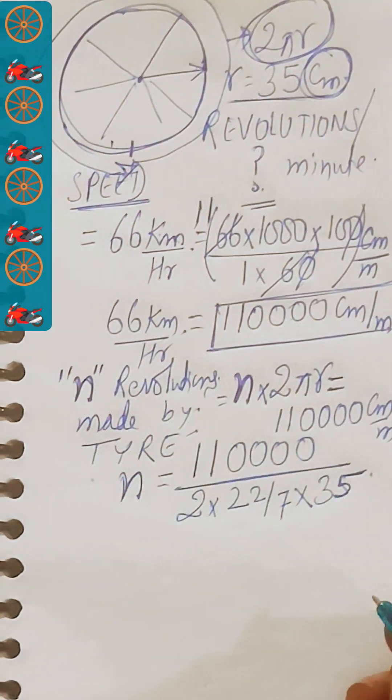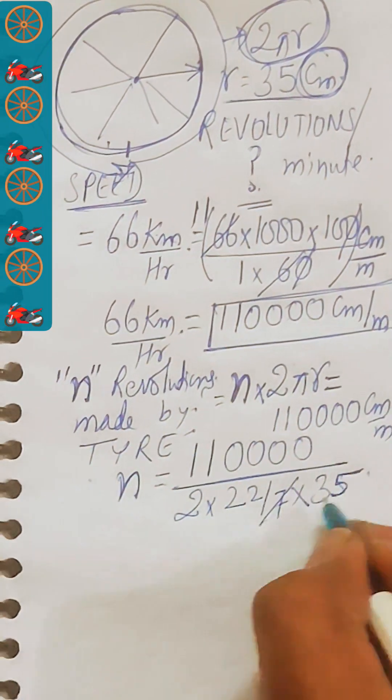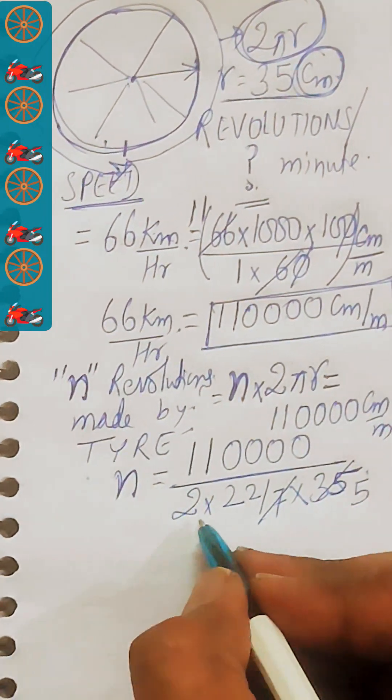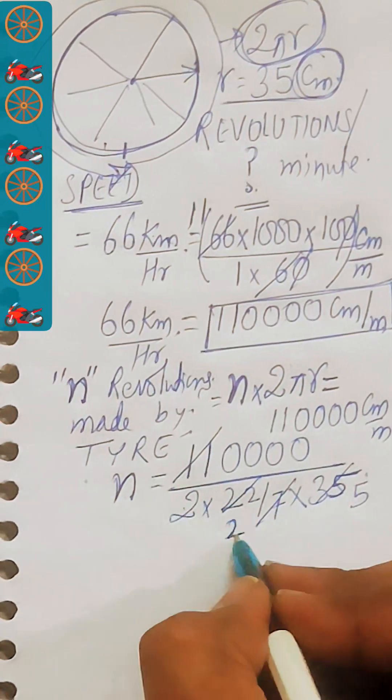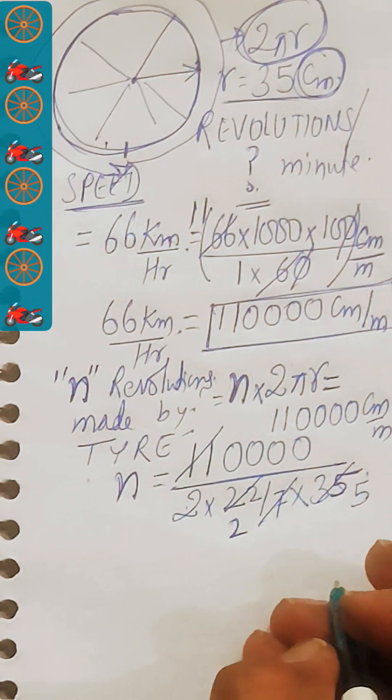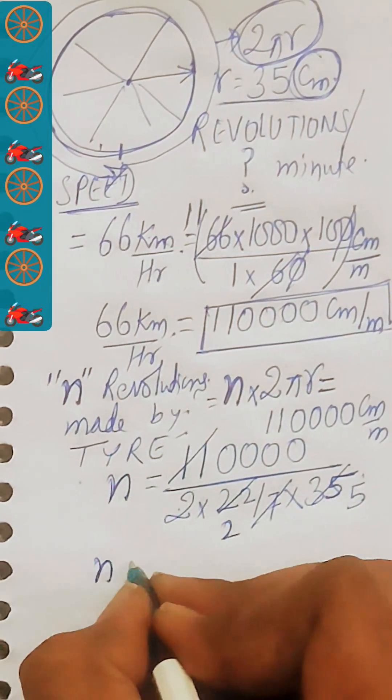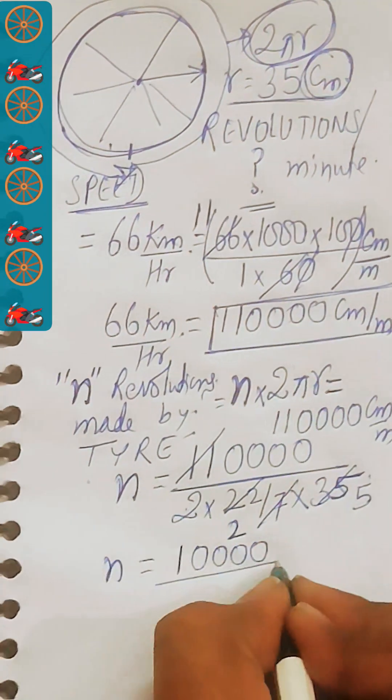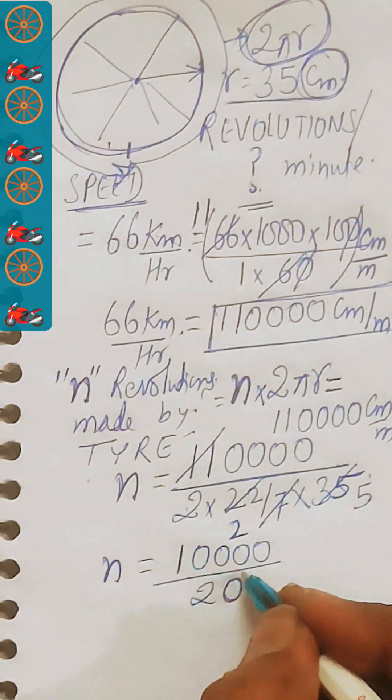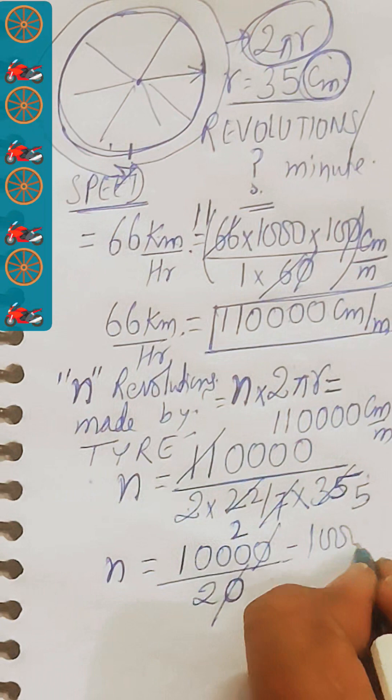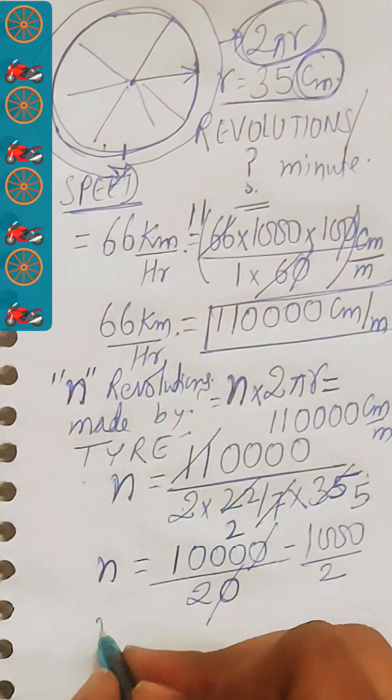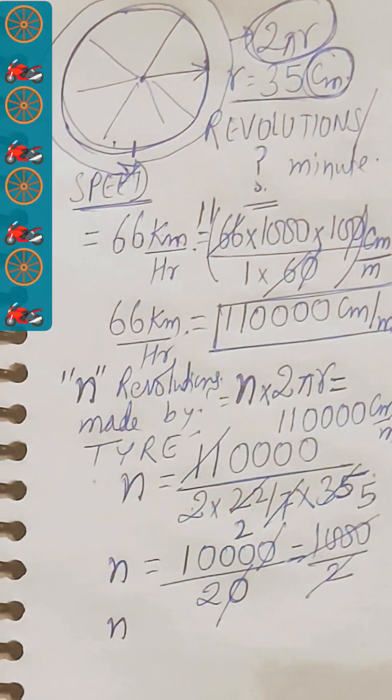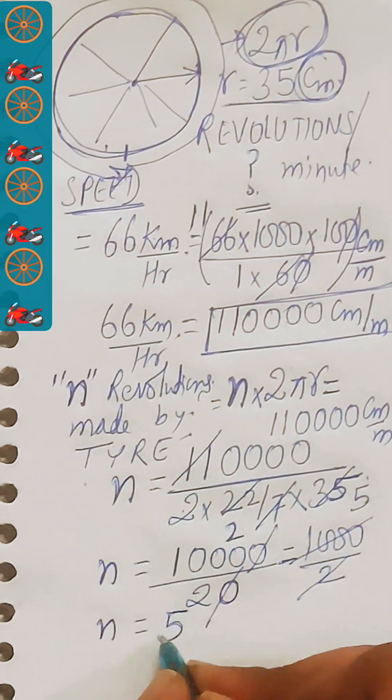Just solve it to get the value of n. Now 7 will divide 35 in 5 times and 11 will divide 22 in 2 times. So 4 into 5, 20. So this will give you the value of n as equal to 10,000 divided by 20, and zero-zero will be cancelled out. This will be 1,000 divided by 2. So finally 2 will divide 1000 in 500 times. So this will give you the value of n as equal to 500.